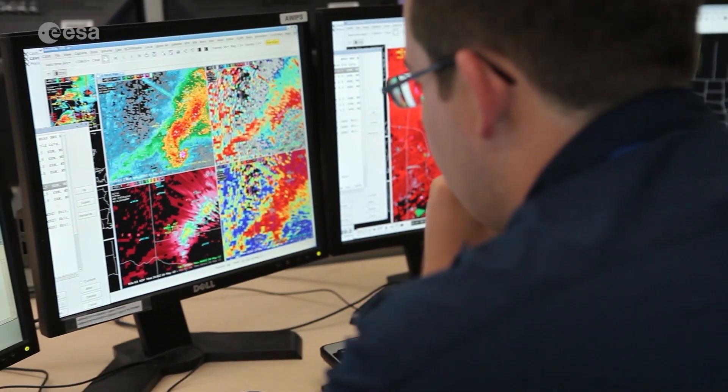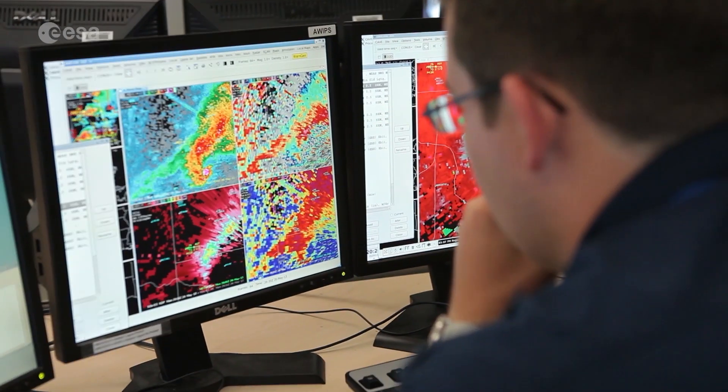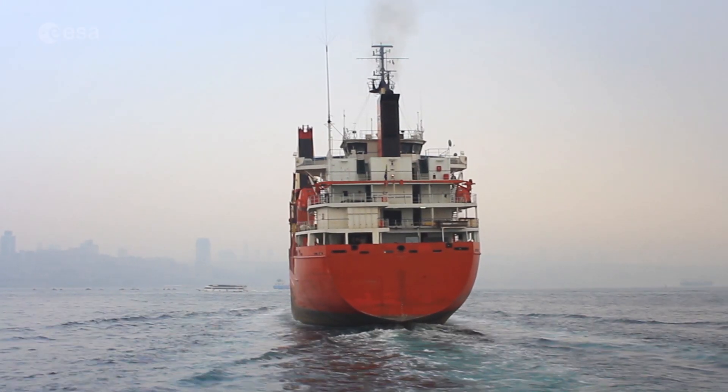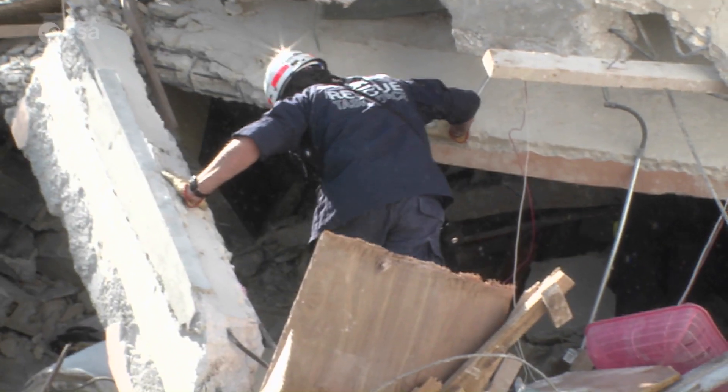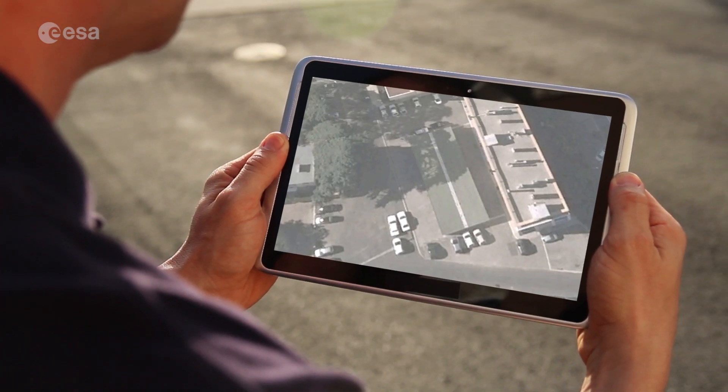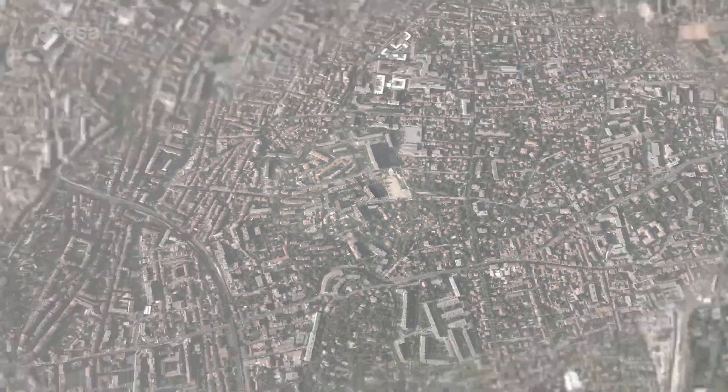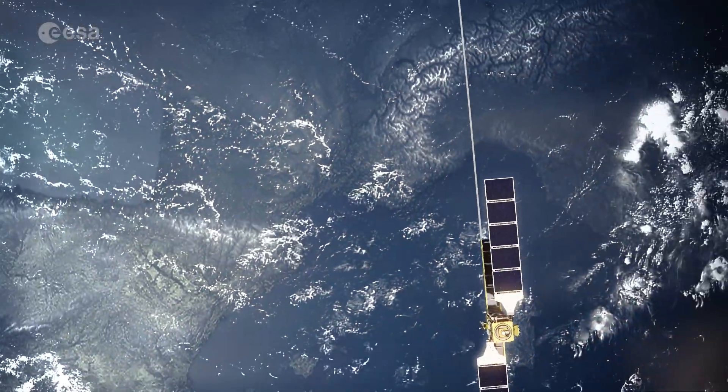Earth observation satellite data has become a part of everyday life. Its applications range from aiding ship travel and supporting relief efforts to monitoring our environment. The immediacy of data obtained from satellites is what makes it so valuable.